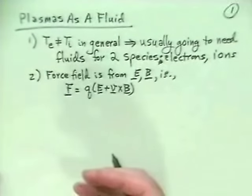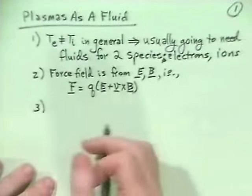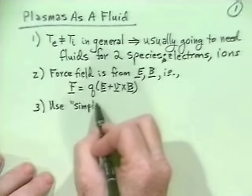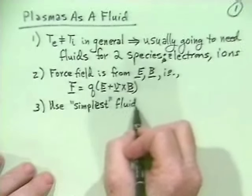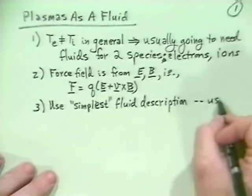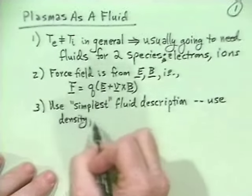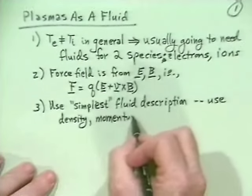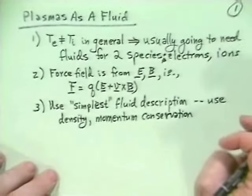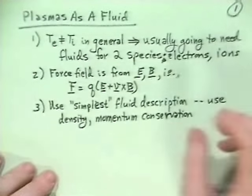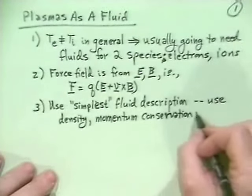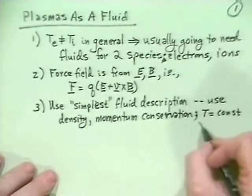We want to construct a fluid description — how does the whole fluid act? We want to use the simplest fluid description we can have. For that, we will use density and momentum conservation equations. For simplicity, we will assume there's no heat transport or entropy production on the timescale of interest, and also no temperature gradient. So we'll set T equals a constant and grad T equals zero.